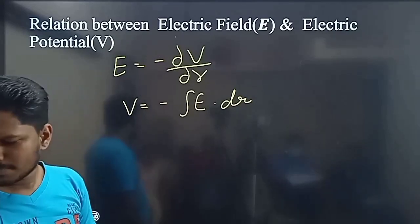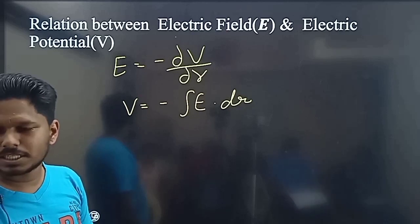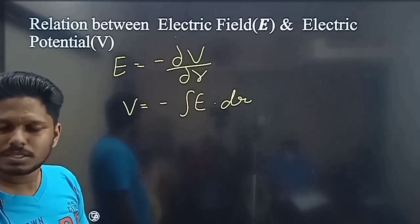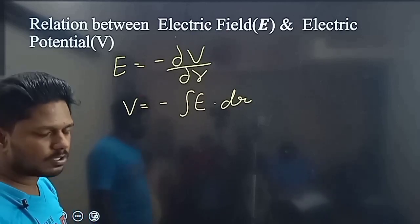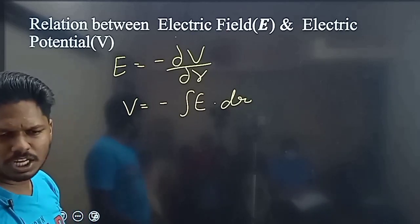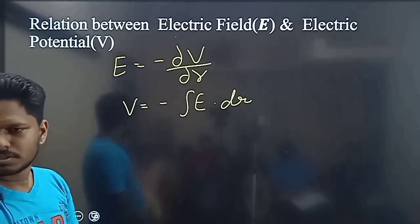V is equal to minus integral of E dot dr. Let's take a note and ask about the question.